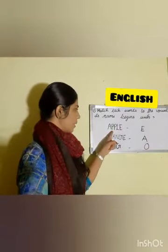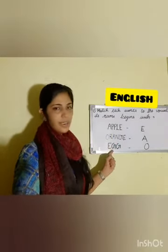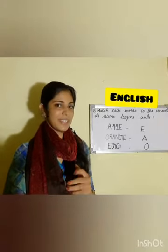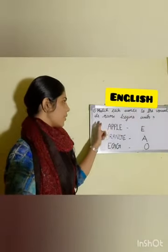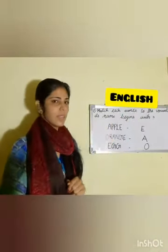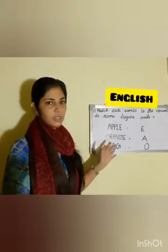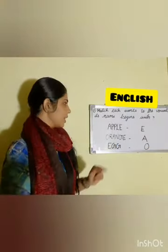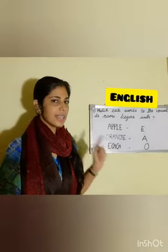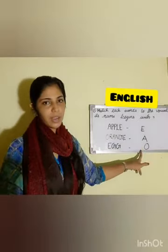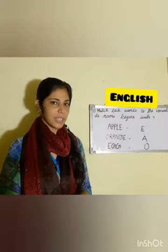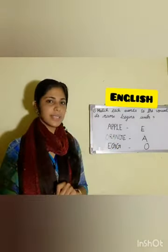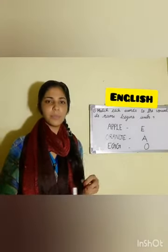Our first activity is: match each word to the vowel its name begins with. The first word is apple, then orange, then egg. What is our activity? You just try to say. Match each word to the vowel its name begins with — that is your activity. Are you clear?